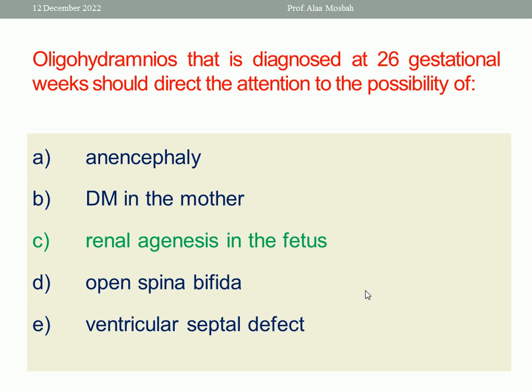Part of the amniotic fluid is formed by fetal urine. If there is renal agenesis or obstruction of the fetal urethra, the amniotic fluid will decrease because there is no fetal urine. So the best response is renal agenesis in the fetus.